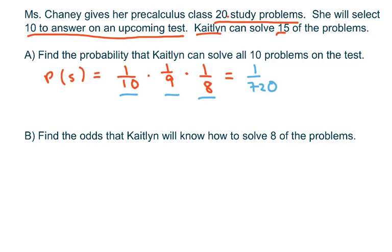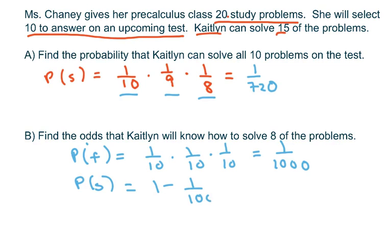Okay. Now, find the odds that Caitlin will know how to solve eight of the problems. So, the probability of her failure is going to be one-tenth times one-tenth times one-tenth, or one-over-a-thousand. And then, success is one-minus one-over-a-thousand, which equals 999 over one-thousand.